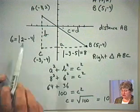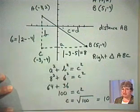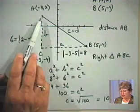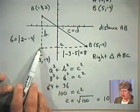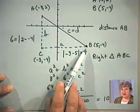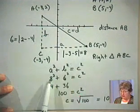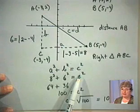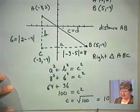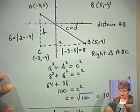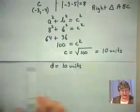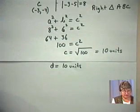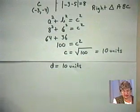Going forward, we're going to proceed exactly the way we did with this example. We're going to plot the two points, draw a right triangle, and then use the Pythagorean Theorem — following the same steps, but doing it in general.